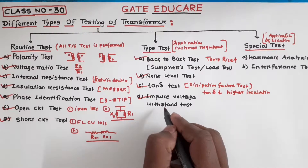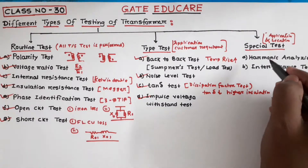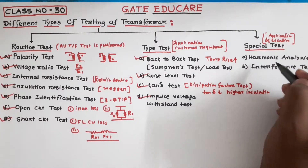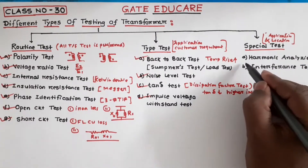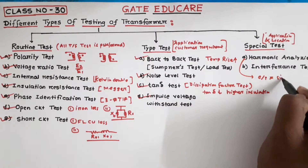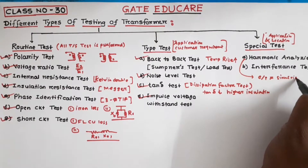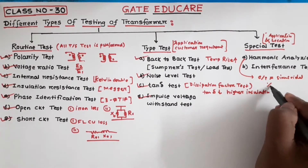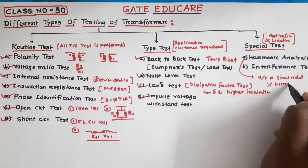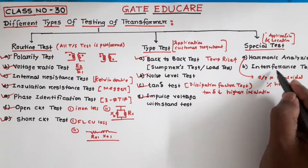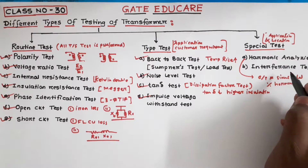Now starting with the special types of tests. There are two types of special tests. One is the harmonic analyzer test — the output should be purely sinusoidal, and this test is performed to know the percentage of harmonics in the output. Next is the interference test, to know the interference with communication lines.